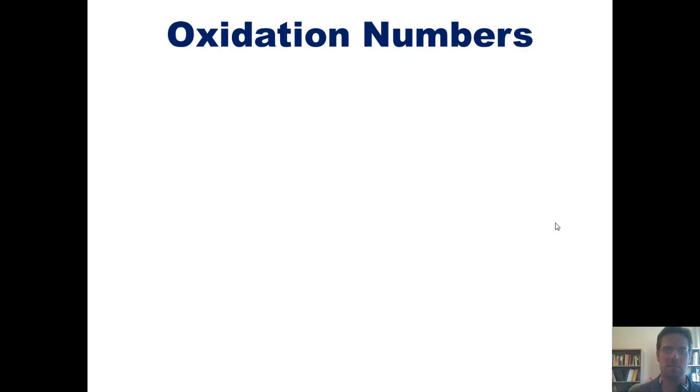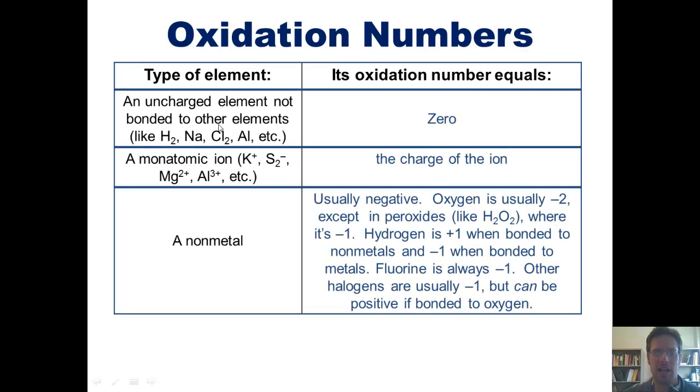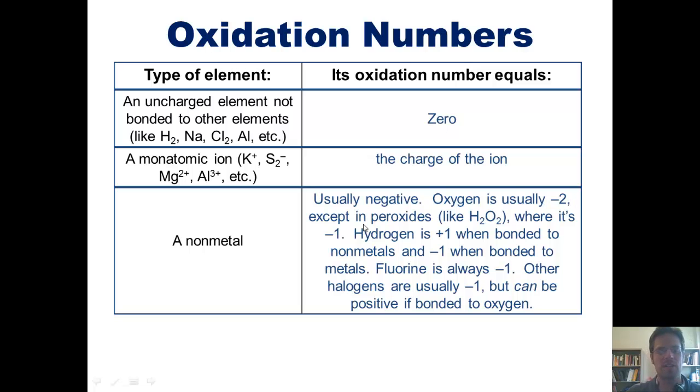So all of these steps can be summarized by the following chart. Any uncharged element that isn't bonded to any other elements has an oxidation number equal to zero. All ions' oxidation numbers are basically the charge of the ion. Any time you have a non-metal, its oxidation number is usually negative. Oxygen's oxidation number is usually -2, except in peroxides like H2O2, where it's -1. Hydrogen is +1 when bonded to non-metals, and -1 when bonded to metals. Fluorine is always -1. Other halogens are usually -1, but can be positive if bonded to oxygen.